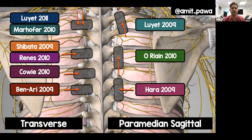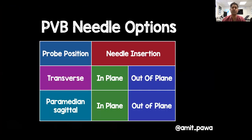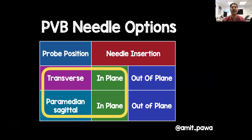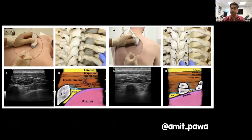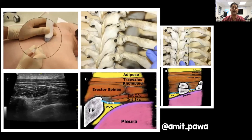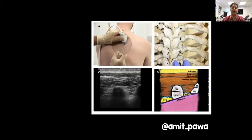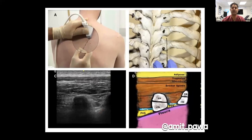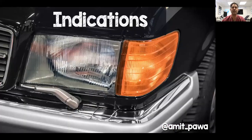You can summarise all these techniques by having the probe in the transverse or paramedian orientation, and needling in-plane or out-of-plane. My preferred technique is to needle in-plane. This is my transverse in-plane needle insertion technique, and this is my paramedian sagittal needle insertion technique — I use just those two variants.